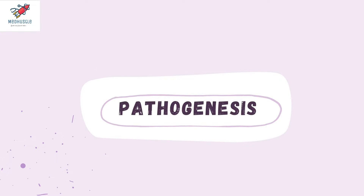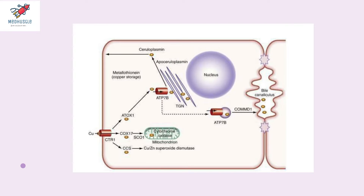Coming to the pathogenesis, let's learn a little about copper transport in the hepatocytes. Dietary foods rich in copper include chocolates, mushroom, and seafood. Copper absorbed from these foods goes into the gut enterocytes and is transported to the liver, i.e., the hepatocytes.